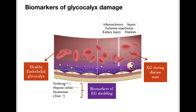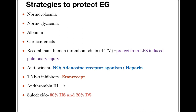To protect the endothelial glycocalyx, various strategies include use of adequate fluid and maintaining normal volemia, maintaining normal glycemia and adequate serum albumin levels. Corticosteroids, due to their anti-inflammatory action, can protect the endothelial glycocalyx. Other anti-inflammatory mediators such as TNF-alpha inhibitors like etanercept can also protect the glycocalyx layer. Antioxidants are helpful as well, including nitric oxide, heparin and adenosine receptor agonists. A recent review suggests that recombinant human thrombomodulin protects the endothelial glycocalyx from LPS-induced pulmonary injury and is helpful in preventing the development of ARDS.